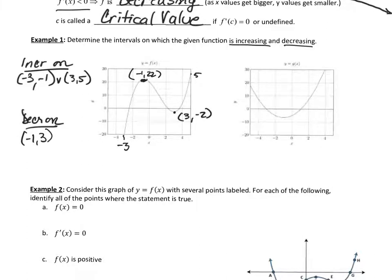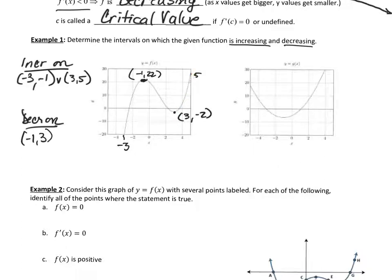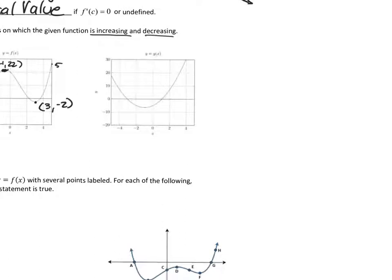This is why the first derivative and the slope of tangent lines matter: on an increasing function, all the tangent line slopes are positive — positive, then less positive, less positive, until the slope is zero at the critical value. Then the slopes become negative, meaning the derivative is negative. Eventually the slopes become less and less negative until they're zero, then positive again.